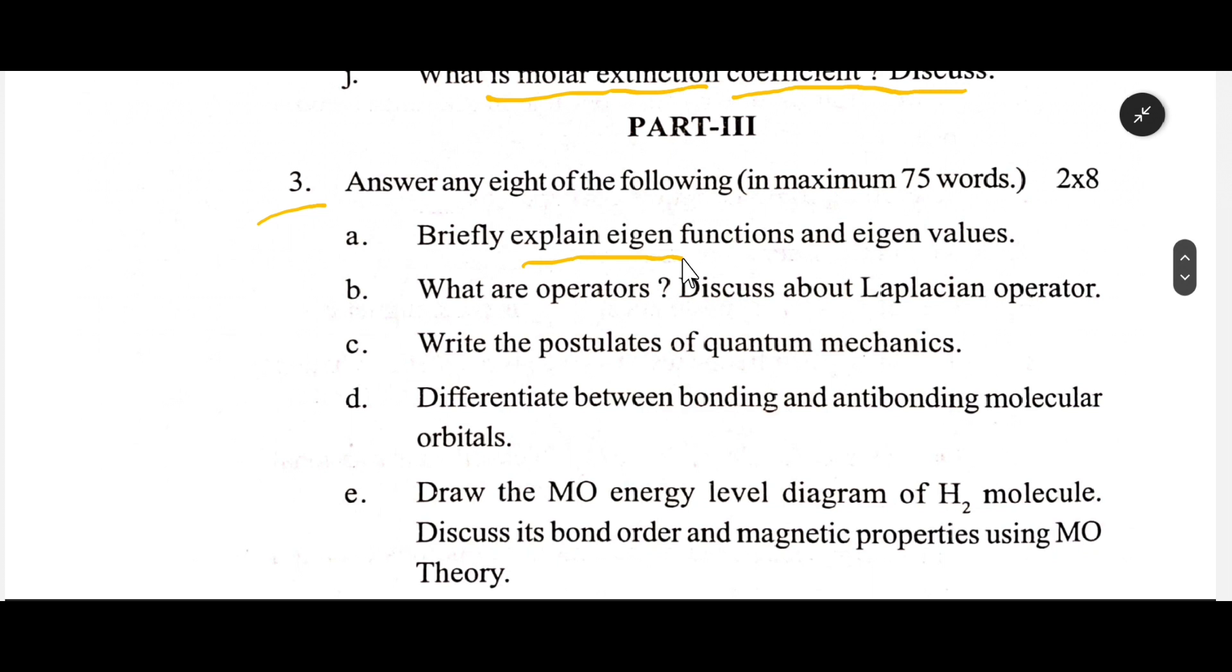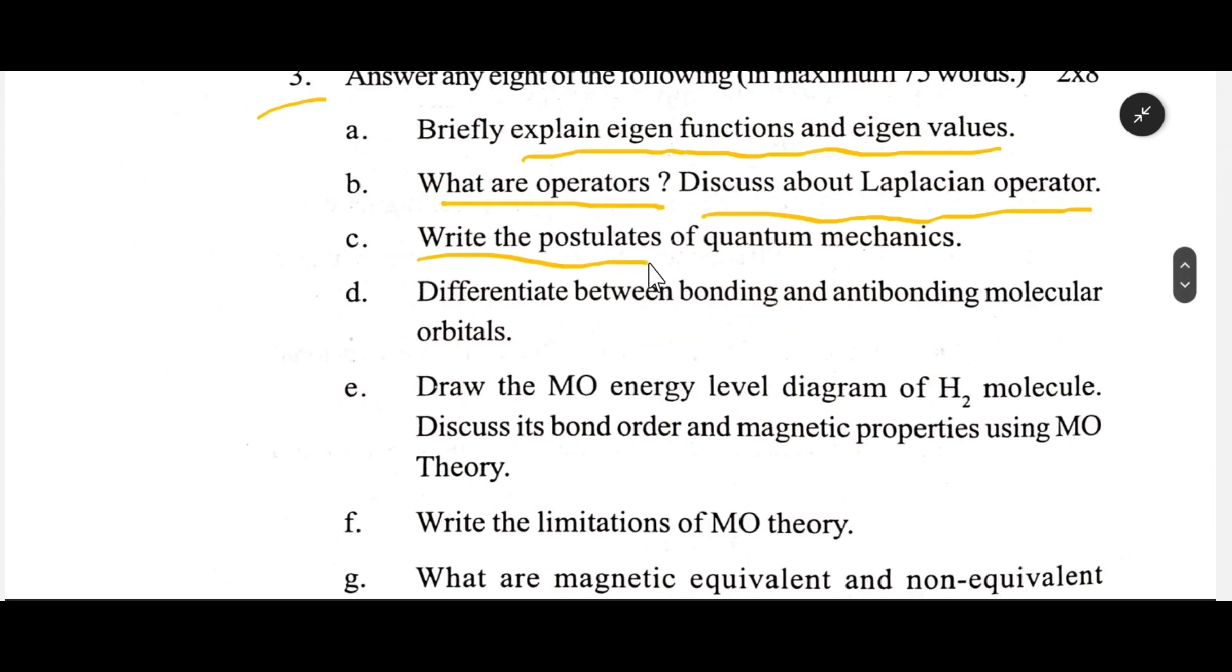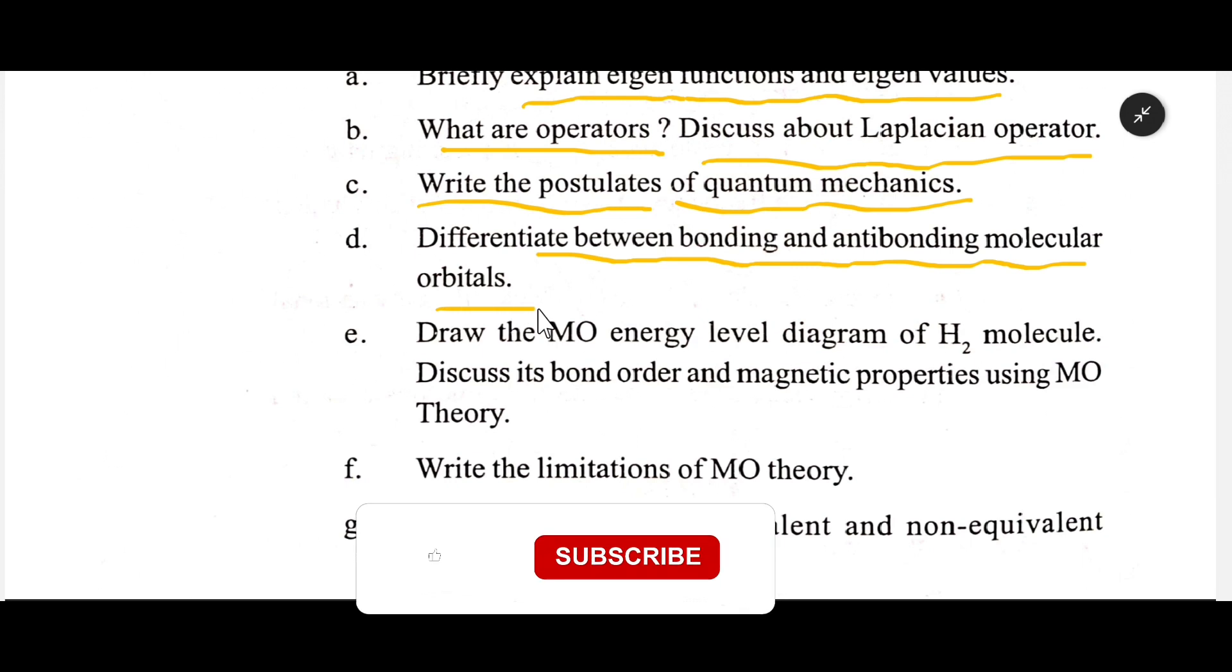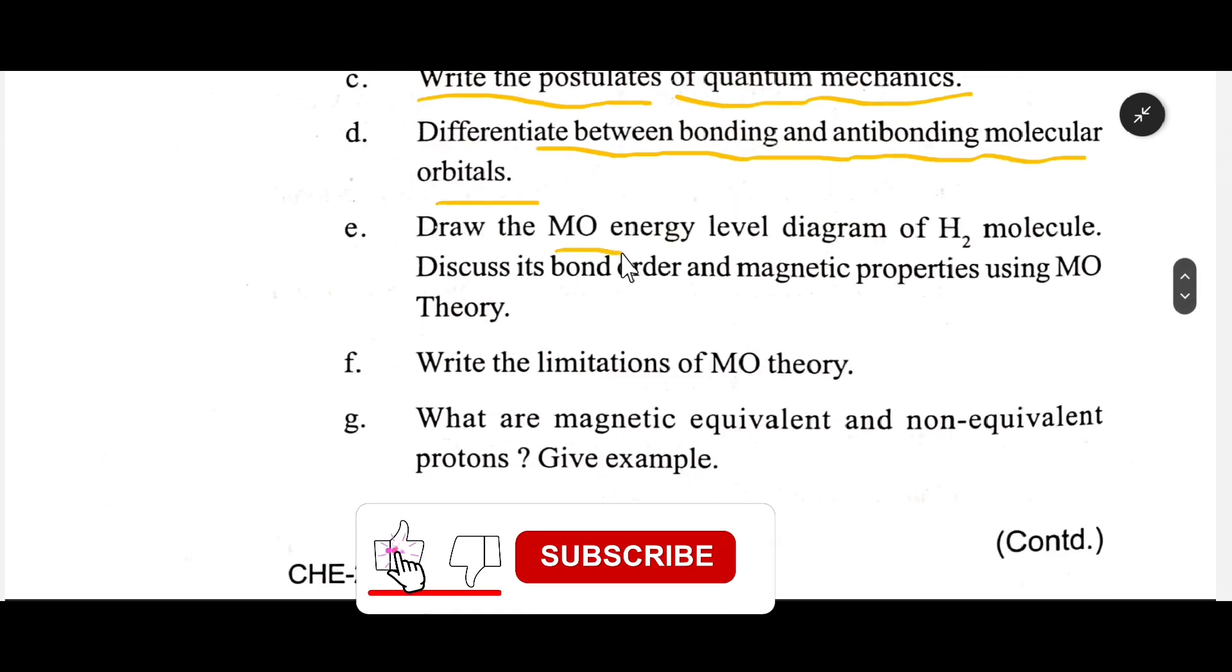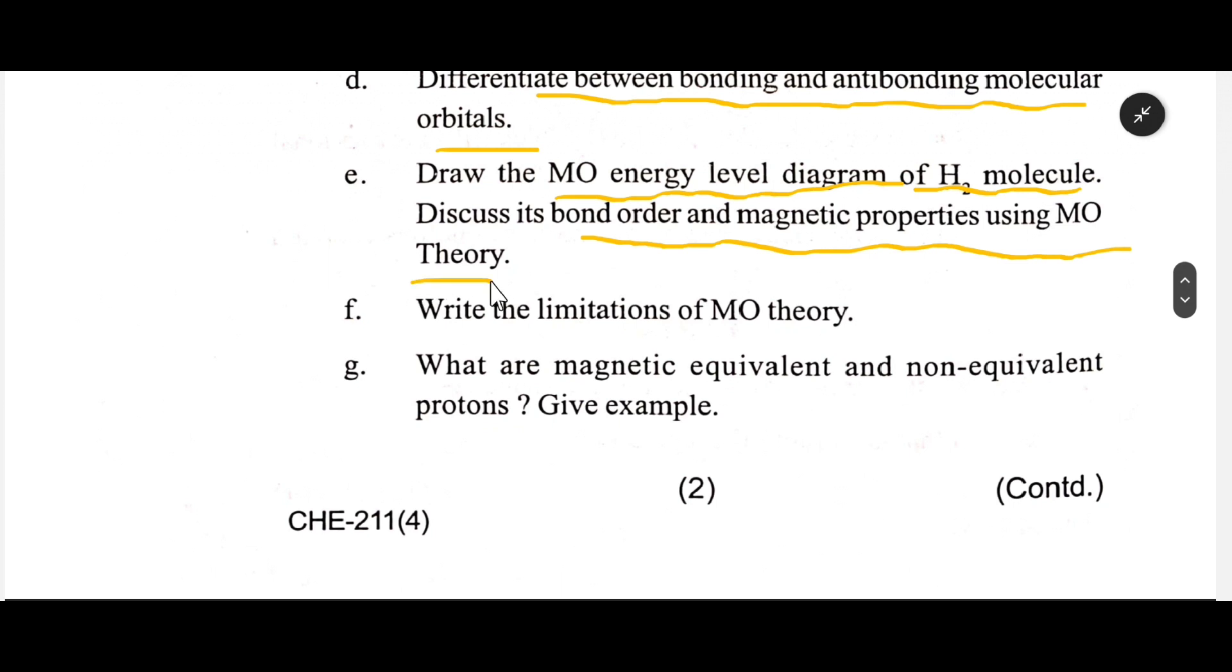Part III, number three: Briefly explain eigen functions and eigen values. What are operators? Discuss about Laplacian operator. Write the postulates of quantum mechanics. Differentiate between bonding and anti-bonding molecular orbitals. Draw the molecular orbital energy level diagram of H2 molecule and discuss its bond order and magnetic properties using MO theory.